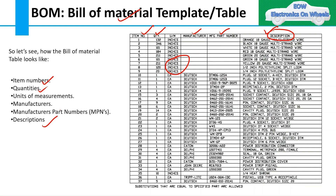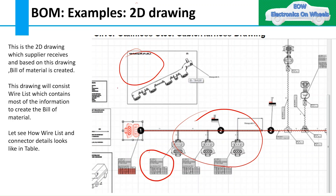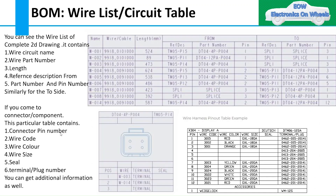Coming to the 2D drawing of the wiring harness — this is the 2D drawing which the supplier receives from the OEM, and based on this drawing, the bill of material is created. This drawing consists of a wire list and connector list, which contains most of the information needed to create the bill of material. Let's see how the wire list and connector details look. Moving to the wire list from the 2D drawing, as you can see on the right side, this is the wire list of the complete 2D drawing.